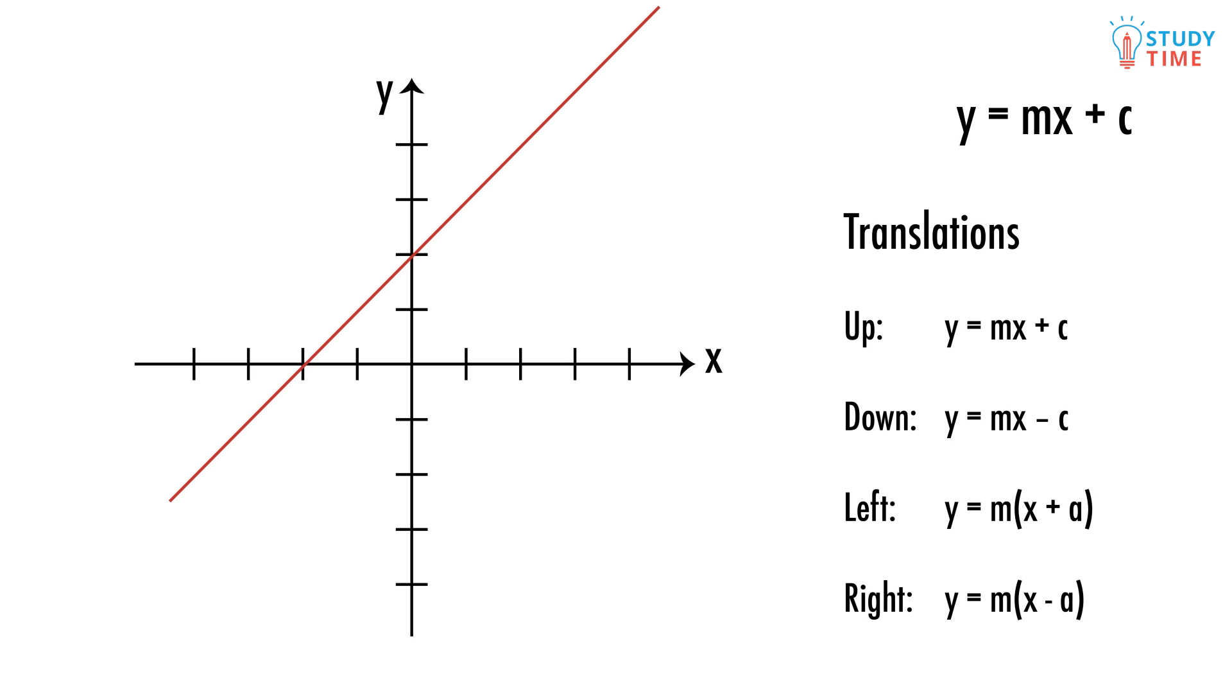So we can translate up with y equals mx plus c, down with y equals mx minus c, left with y equals m times (x plus a), or right with y equals m times (x minus a). You can even mix and match these translations. It's quite easy to do this for a linear graph, but it can get tricky with other graphs.